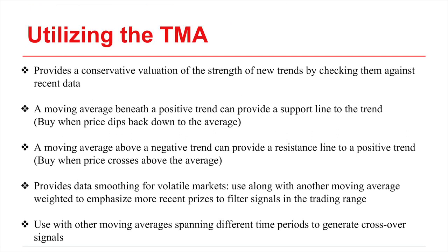Now utilizing the TMA: the triangular moving average provides a conservative valuation of the strength of trends by checking them against the evenly weighted spread of recent data. They produce signals similar to other moving averages, where they can act as support or resistance lines. When the moving average is beneath a positive trend, the trend can be construed as a support line so that the buy signal is generated when price dips back down to the average, indicating that since the line is serving as support, it will rise back above to previous highs.